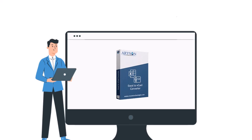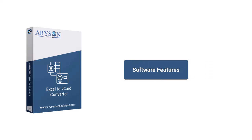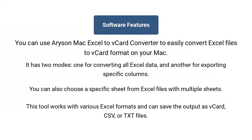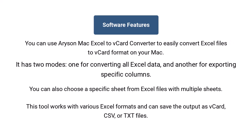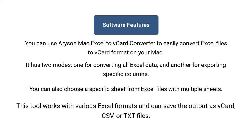In this video, we will show you how to convert Excel files into vCard with two different modes. Now let's check out the main features of the software. You can use Arison Mac Excel to vCard Converter to easily convert Excel files to vCard format on your Mac. It has two modes: one for converting all Excel data, and another for exporting specific columns. You can also choose a specific sheet from Excel files with multiple sheets. This tool works with various Excel formats and can save the output as vCard, CSV, or text files.